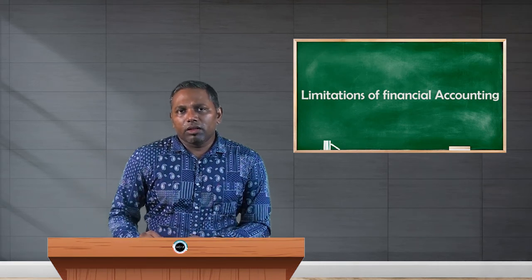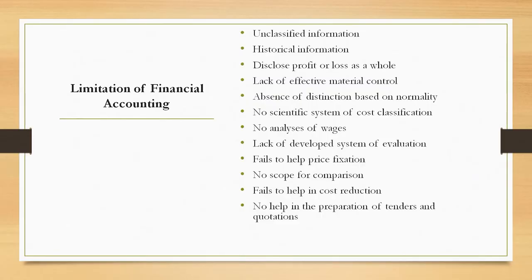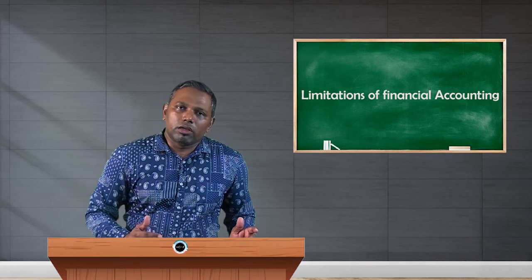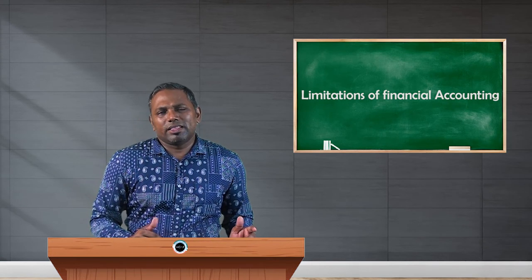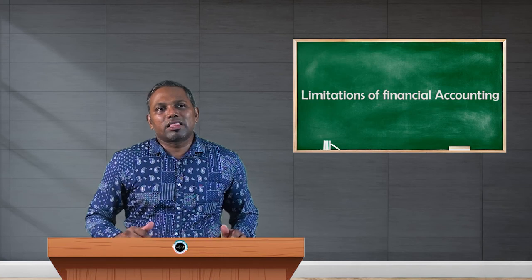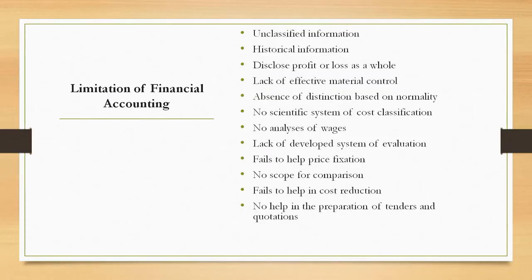Another important point is that there is no scientific system of cost classification in financial accounting. In cost accounting, we classify costs in various ways — such as controllable cost, uncontrollable cost, normal cost, abnormal cost — and we have around six to seven methods of classifying cost which we will discuss in upcoming classes. Also, there is no analysis of wages in financial accounting, meaning we cannot classify or analyze whether wages are necessary or not.